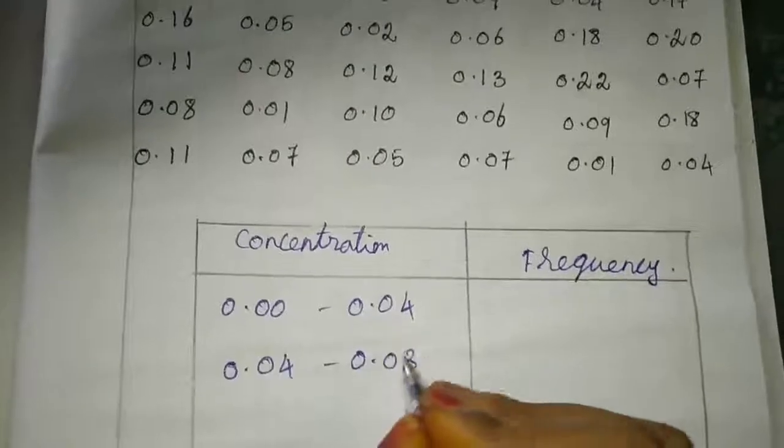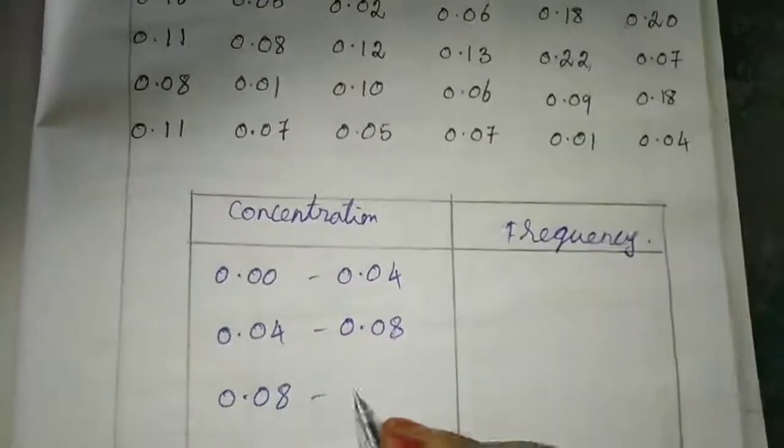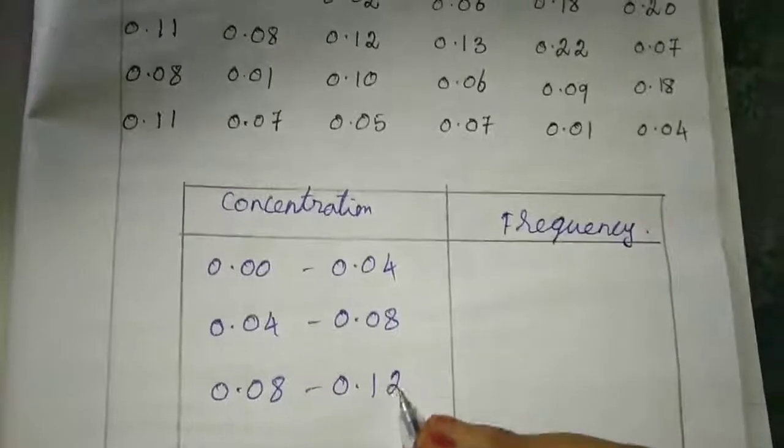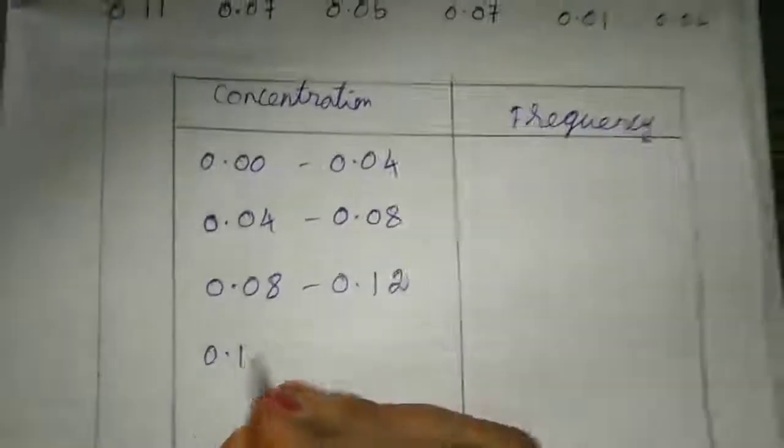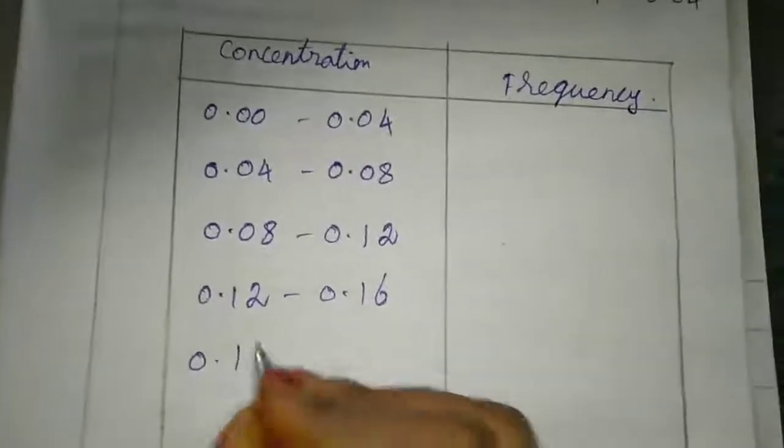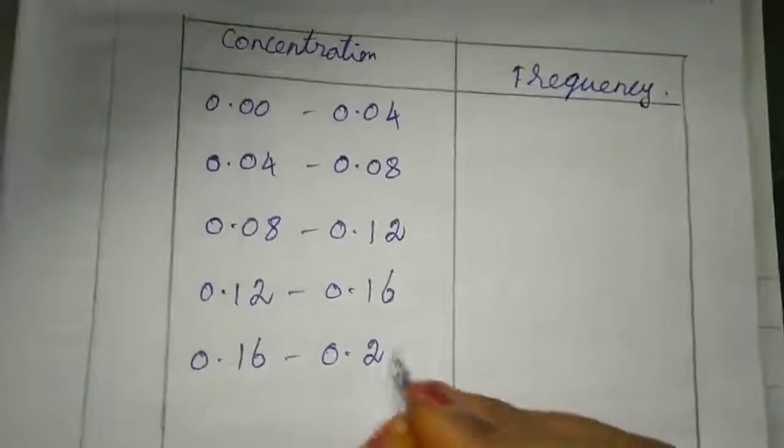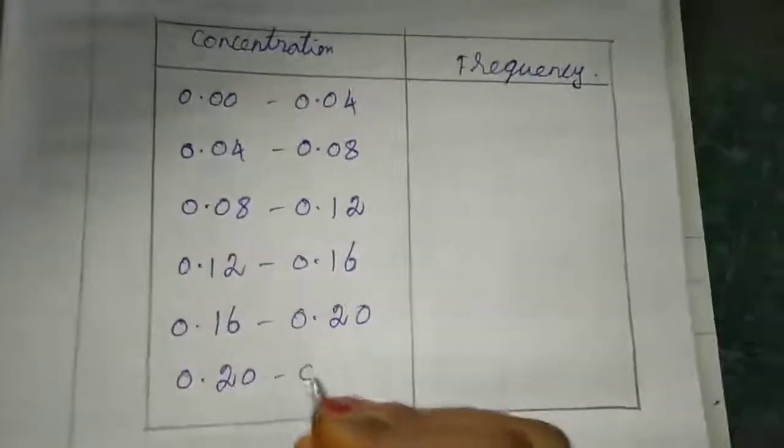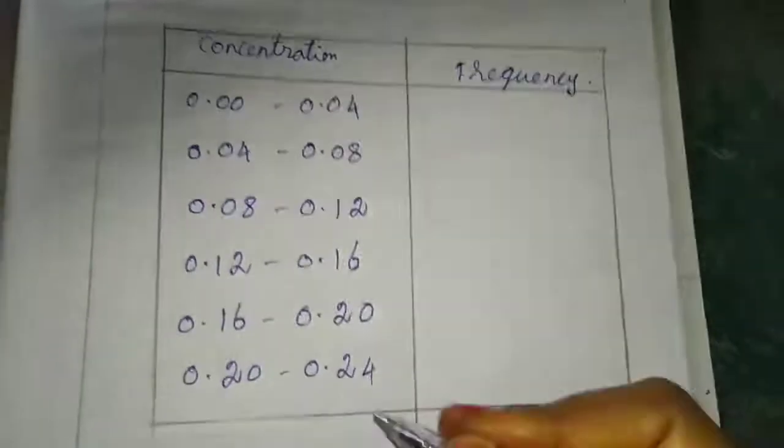The intervals they gave: 0.00 to 0.04, 0.04 to 0.08, 0.08 to 0.12, 0.12 to 0.16, 0.16 to 0.20, then 0.20 to 0.24. Up to this I wrote, if we need we will continue the intervals.